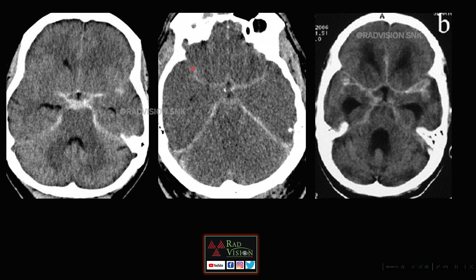The relative hyperdensity along the tentorial leaves, along the falx, and along the sylvian fissures is seen in a case of diffuse cerebral edema or hypoxic-ischemic encephalopathy (HIE). This is a similar imaging appearance but the differential diagnosis is different.